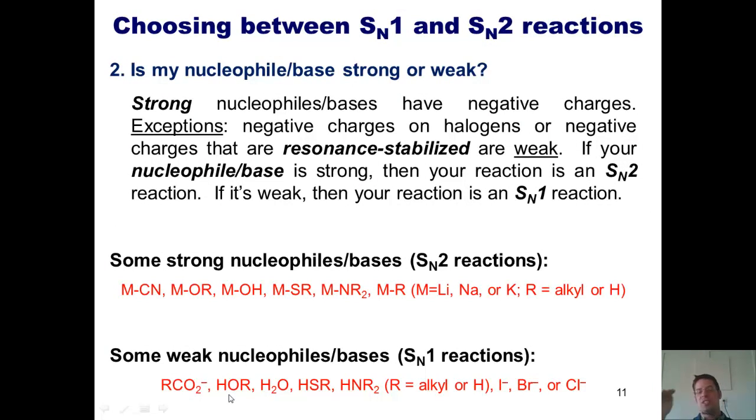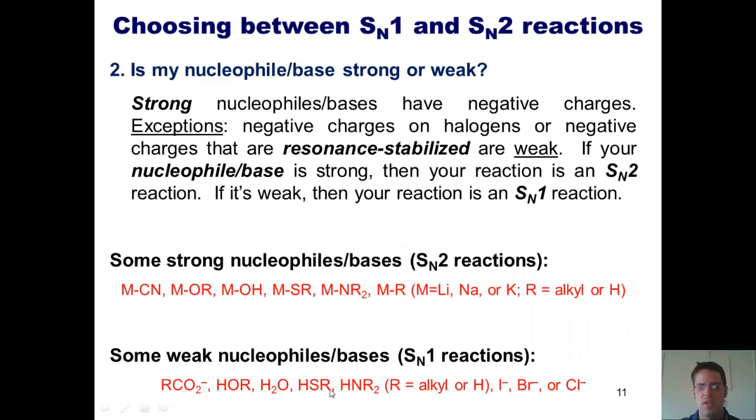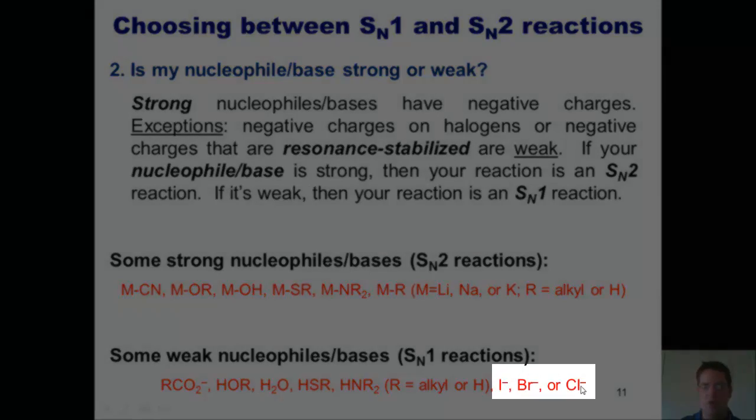The lone pair electrons can still do substitution reactions, but they are not as reactive as having a localized negative charge on an atom. Thus, these guys are going to be weak nucleophiles. Same thing goes for thiols and for amines, as well as halogens that have negative charges on them.